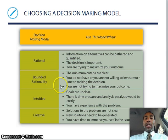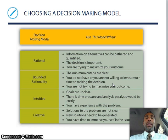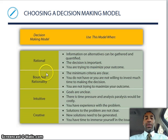Bounded rationality: the minimum criteria are clear, and you do not have or are not willing to invest much time in making the decision. It's kind of like what they call a SWAG decision — hey, this is the information, I think in general I can make it, we'll go ahead with that. And you're not trying to maximize your outcome. With the rational decision-making model, you're trying to squeeze everything out of the turnip.